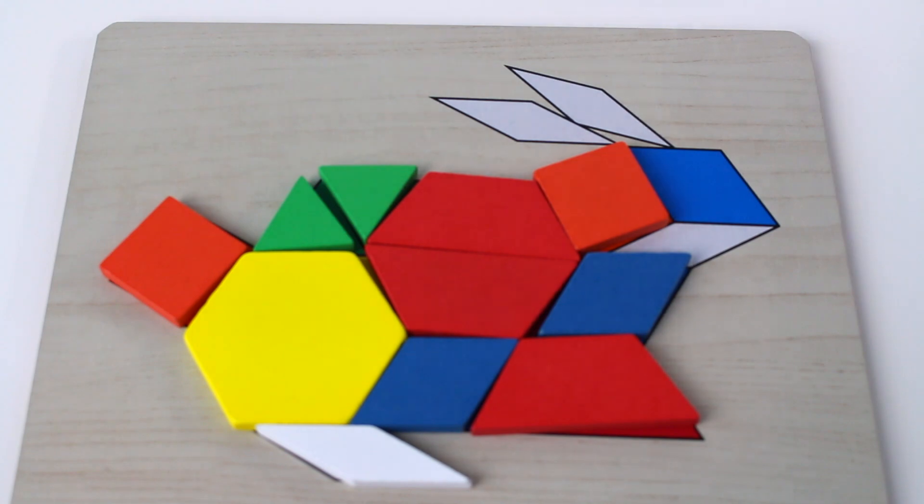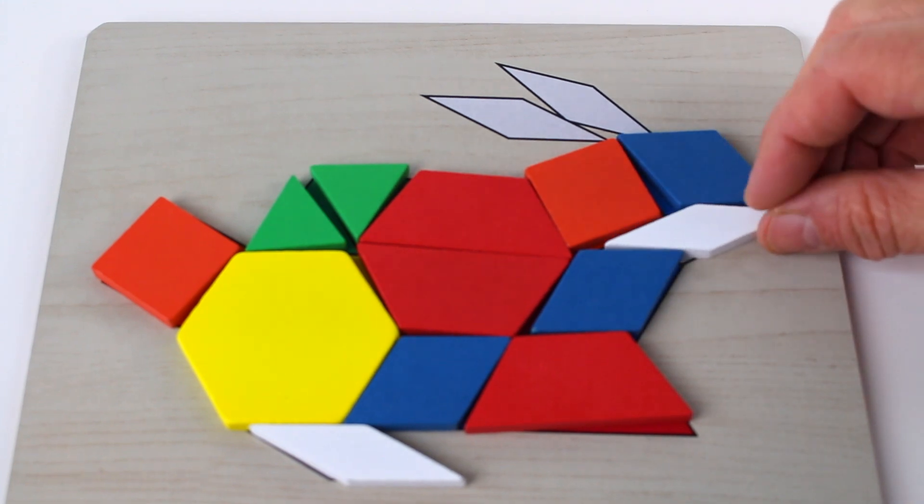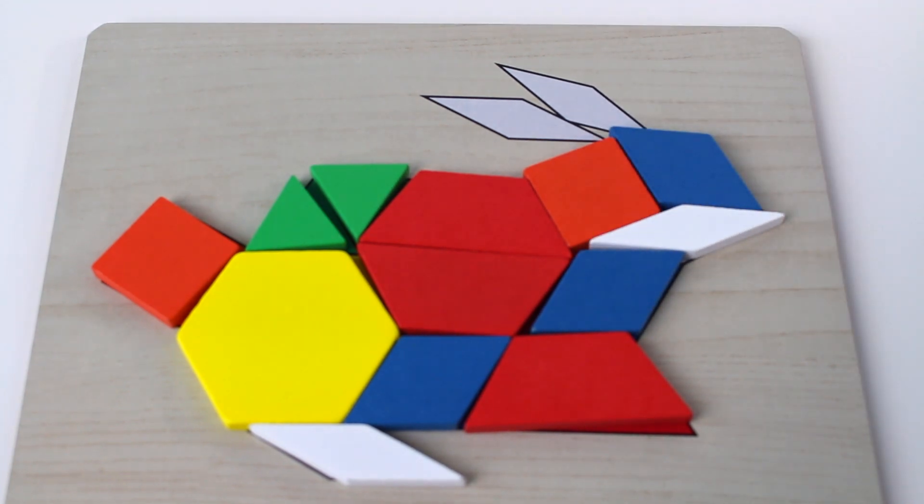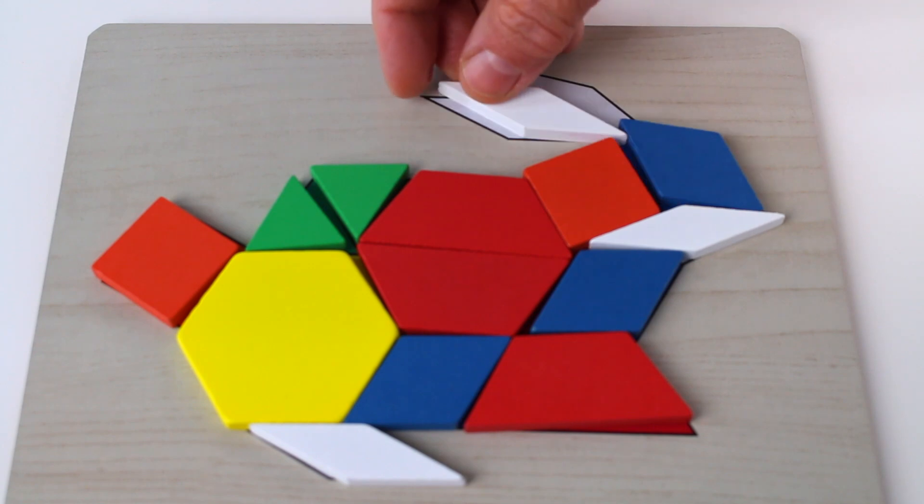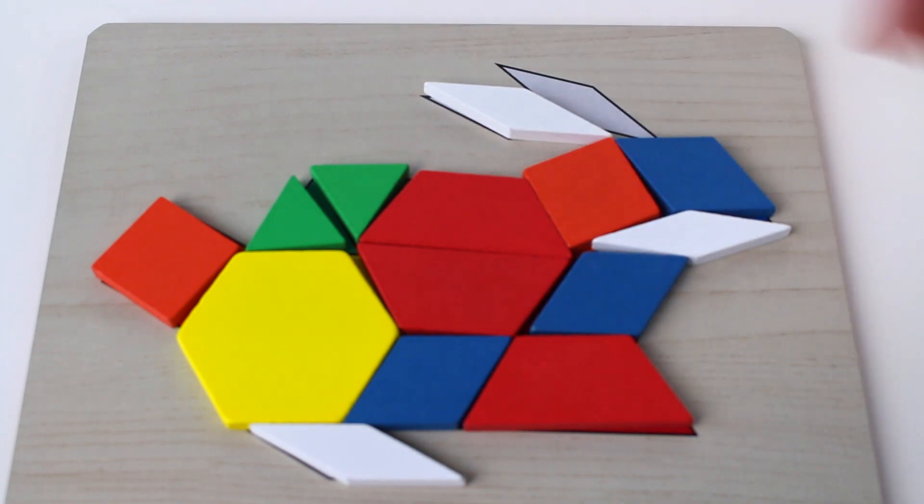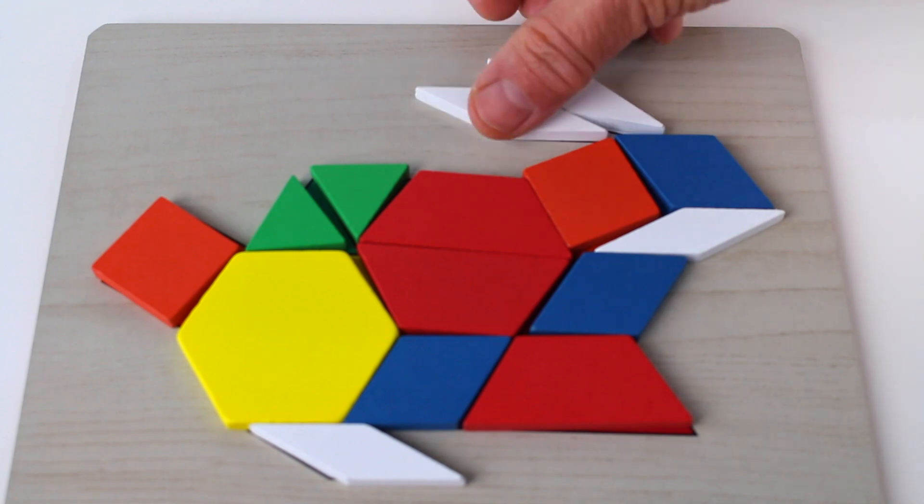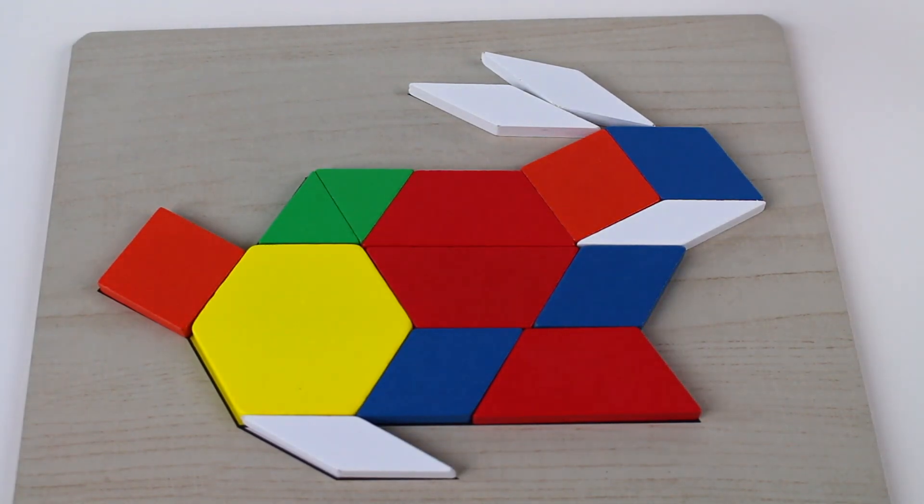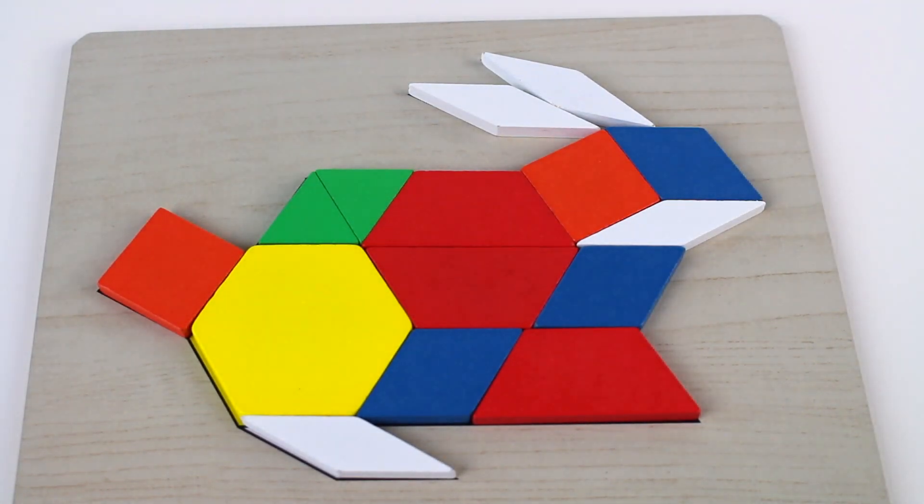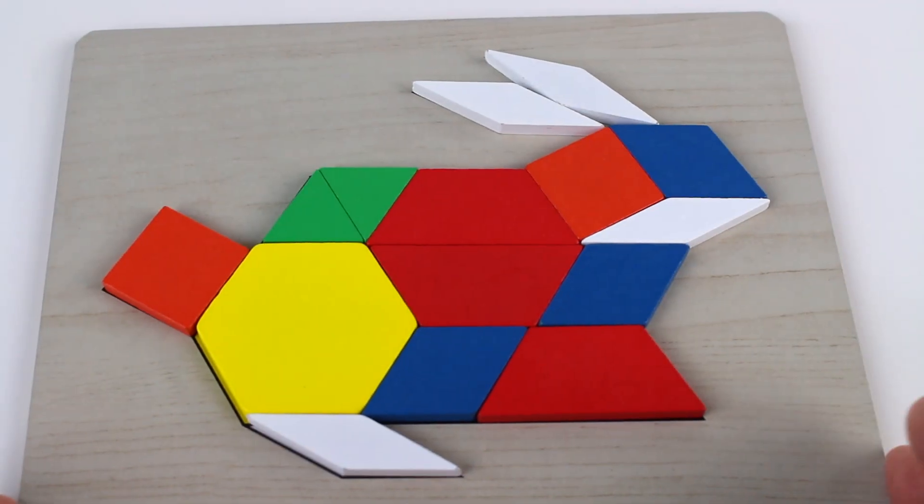Orange square, blue rhombus, white rhombus. And for the ears, we have two more white rhombus. Puzzle board bunny rabbit made with shapes. That was fun.